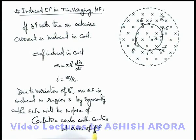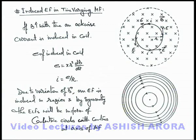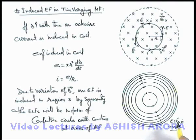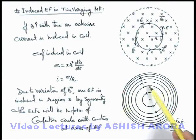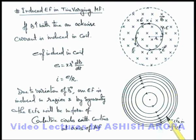Just to analyze the electric lines of force in this magnetic field, let's have a look at this picture. This picture shows us the configuration of electric lines of force in a time-varying magnetic field. As we move away from the center, from the formula we can see that the EMF induced in the coil increases as it is proportional to r squared. So the induced electric field will also increase as we move away from the center, and the density of electric lines of force will also increase.